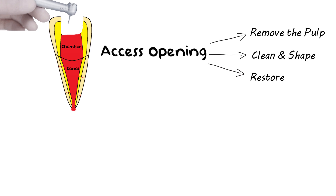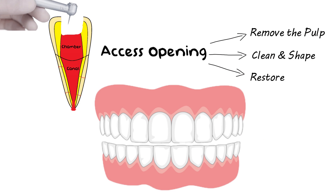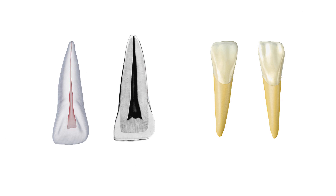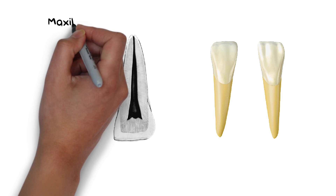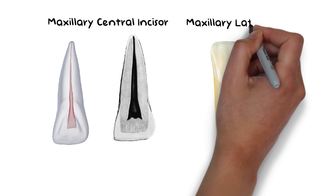Today we'll be looking into how to do an access opening of the maxillary central and the maxillary lateral incisor. To understand the access opening, we first need to briefly go through the internal anatomy of the maxillary central and the lateral incisor.